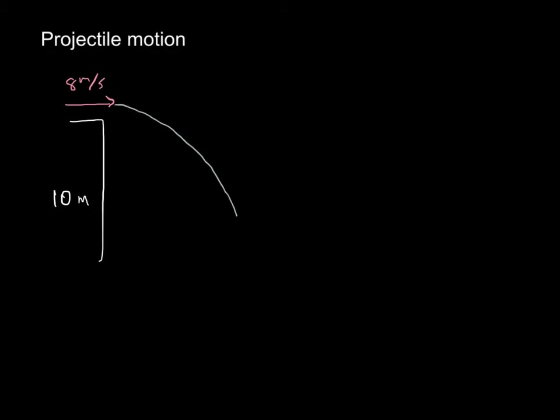When we talk about projectile motion, we're talking about an object moving in both the horizontal and vertical direction at the same time. For a simple example, let's say we have a cliff that is 10 meters high and we're going to throw a ball horizontally off the cliff at 8 meters per second. The path it makes looks like this, and I want to find out how far away from the base of the cliff the ball is going to land.